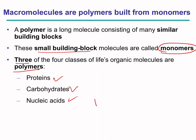A single building block called a monomer links with another single building block, which is another monomer, so on and so forth, giving rise to a chain of building blocks called a polymer.